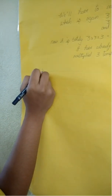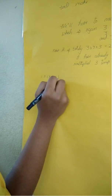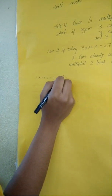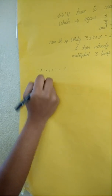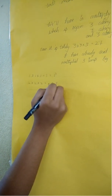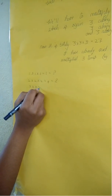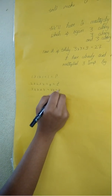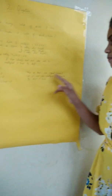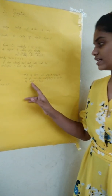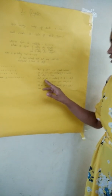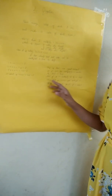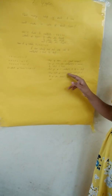The numbers 1 into 1 into 1 equals 1, written as 1 cube. 2 into 2 into 2 equals 8, written as 2 cube. 3 into 3 into 3 equals 27, written as 3 cube. This is how we represent them. In general, if n is multiplied by itself 3 times — n into n into n — you get n cube. This is the general format of a perfect cube.